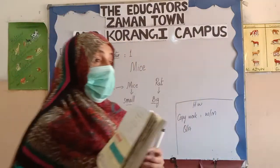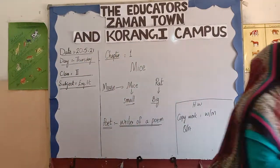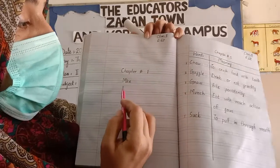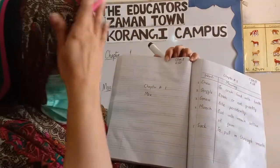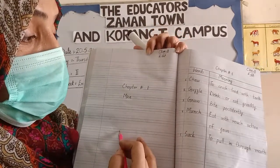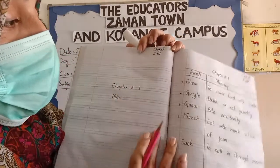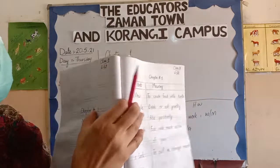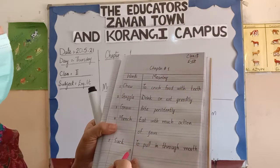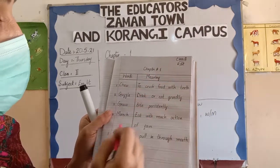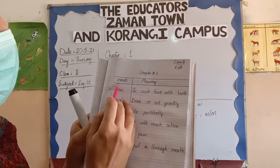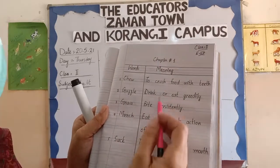Now I have copy work for you. First, you will make a title page of your chapter — chapter number 1, Mice. On the title page, you can draw according to your chapter, like mice, flowers, or clouds — it's up to you. You have to complete your word meanings. On this page you will maintain all the things: write the date, chapter number 1, word meanings. You have 5 words and 5 meanings.